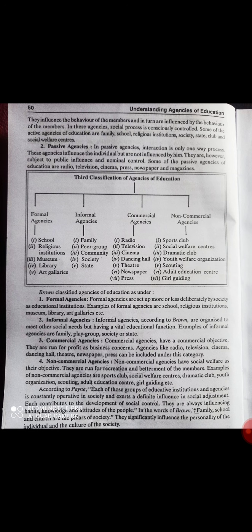Active agencies میں social process culturally controlled ہوتا ہے — teacher کے پاس control ہوتا ہے کہ کیا پڑھانا ہے اور کیا نہیں۔ اس کا control اس agency کے ہاتھ میں ہوتا ہے۔ Active agencies میں family، schools، religious institutions، society، state، clubs اور social welfare centers آتے ہیں جہاں آمنے سامنے interaction ہوتی ہے اور interaction کا control انہی کے ہاتھ میں ہوتا ہے۔